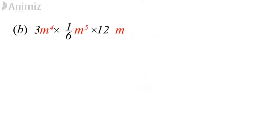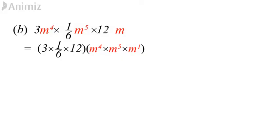Example B: group the coefficients and the algebraic terms with the same base. Then operate the coefficients: 3 × (1/6) × 12 = 6. After that, apply the first law of indices for the algebraic term: m^(4+5+1). The answer will be 6m^10.